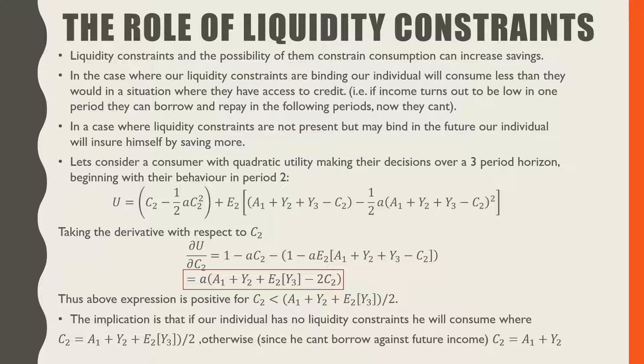By example, if our individual has low income in one period, he can borrow against another period and repay that loan back in the following period.